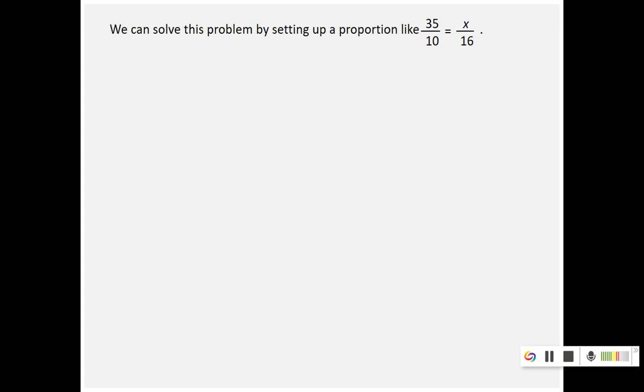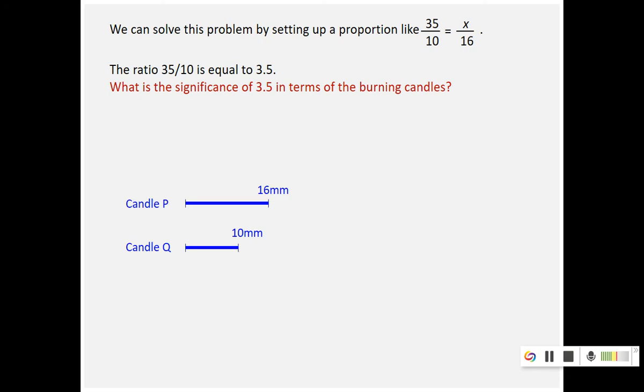Now we can also solve this problem using the second method, where you use the proportion 35 over 10 equals X over 16. Again, can you tell what's the significance of 3.5? 35 over 10 is 3.5. What does this 3.5 represent in the context of the burning candles? Let's take a look again.